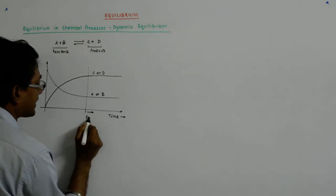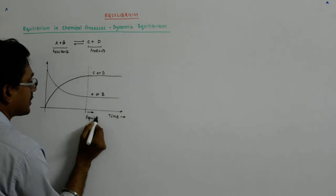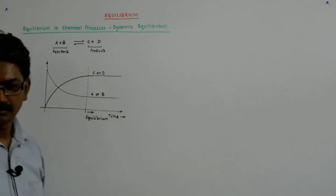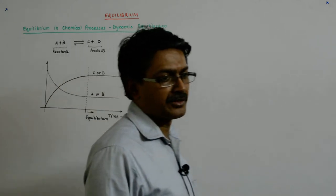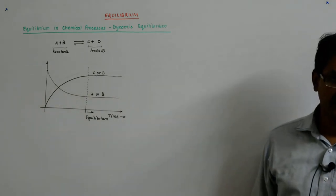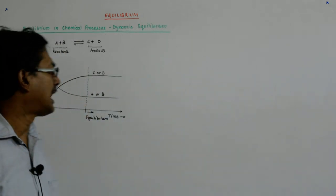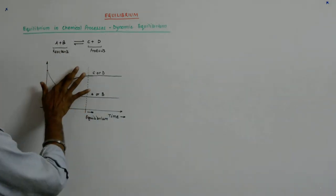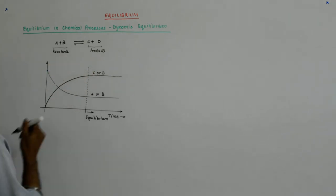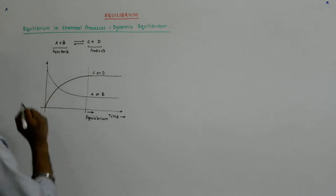After this point onwards, the equilibrium has set in. Beyond this, that'll also give you an idea for the time taken to reach an equilibrium. If you do this and then maybe we can reduce that time, that is a different matter altogether. But this is what we do in a chemical process.